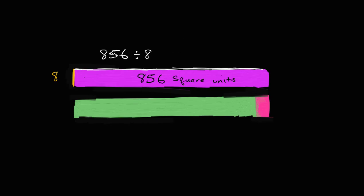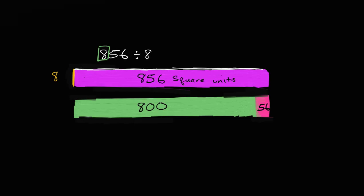Well, you could break it up into eight hundreds, five tens, and six ones. But you might notice that five tens is not so easy to divide by eight. But we can divide 56 by eight — we know that eight times seven is 56. So what you could do is break this rectangle into the 856 square units as 800 square units and then another 56 square units. So we broke it up into eight hundreds and then 56 ones.